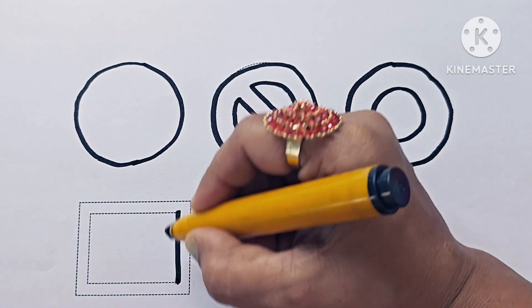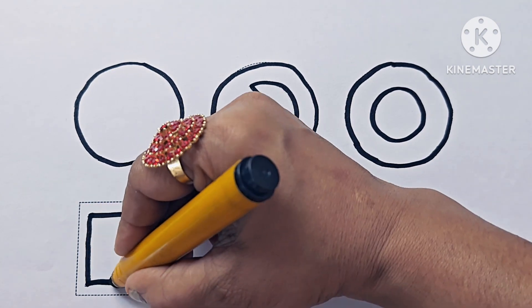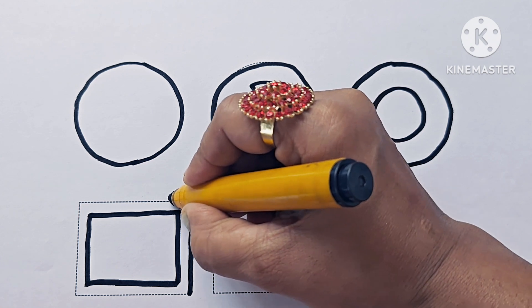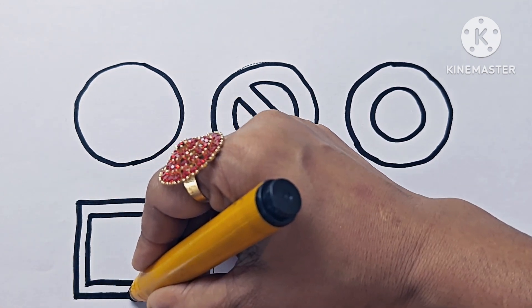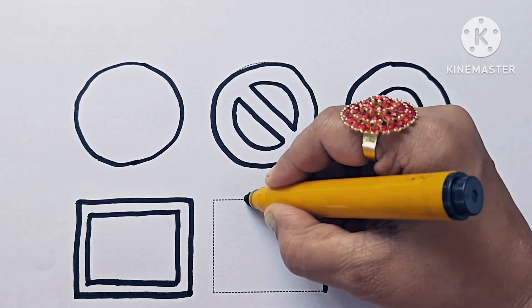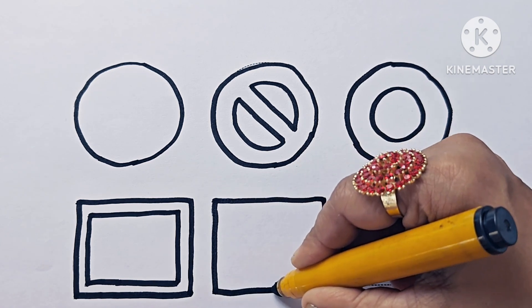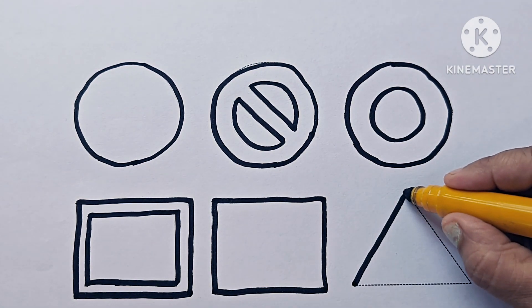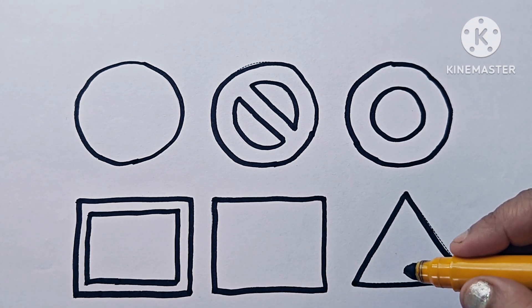This is a rectangular frame. It is rectangle in shape, so we call it a rectangular frame. This is a rectangle — rectangle has four sides, opposite sides are equal. This is a triangle — triangle has three sides, three vertices, three corners.